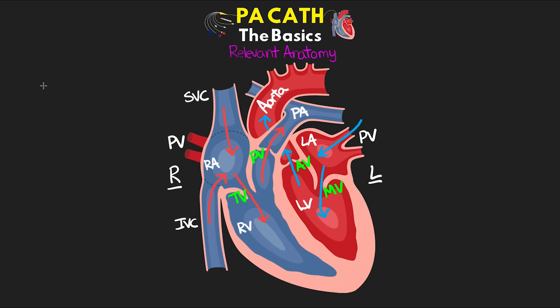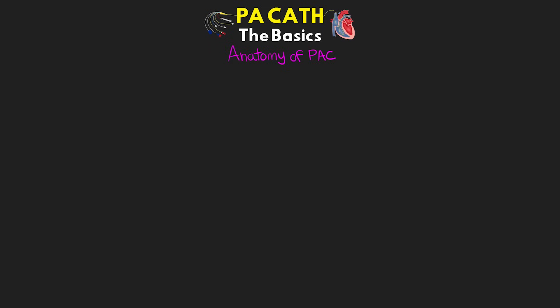The PA catheter is a long, balloon-tipped venous catheter that enters the venous blood system. It is typically inserted via the right internal jugular vein, but can also be inserted via the left IJ, subclavian veins, or femoral veins. The catheter is passed into the right atrium, through the tricuspid valve, into the right ventricle, up through the pulmonic valve, and terminates in the pulmonary artery. This path allows us to sample or measure blood at various points.